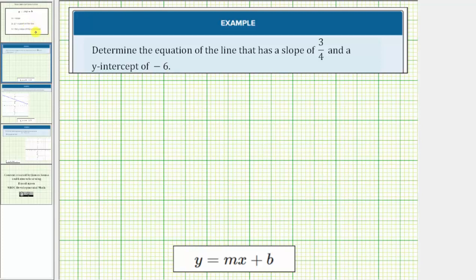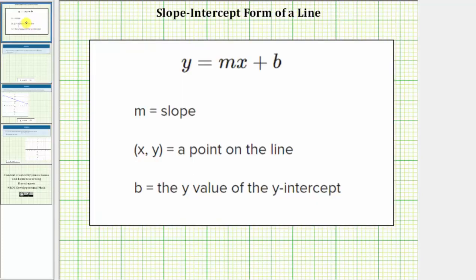Slope-intercept form of a line is the form y equals mx plus b, where m equals the slope of the line and b equals the y-value of the y-intercept. Remember, we normally like to have the y-intercept as an ordered pair. The ordered pair would be zero comma b.